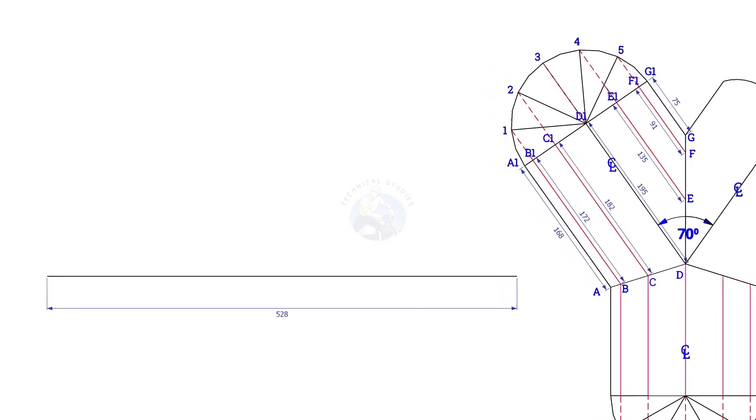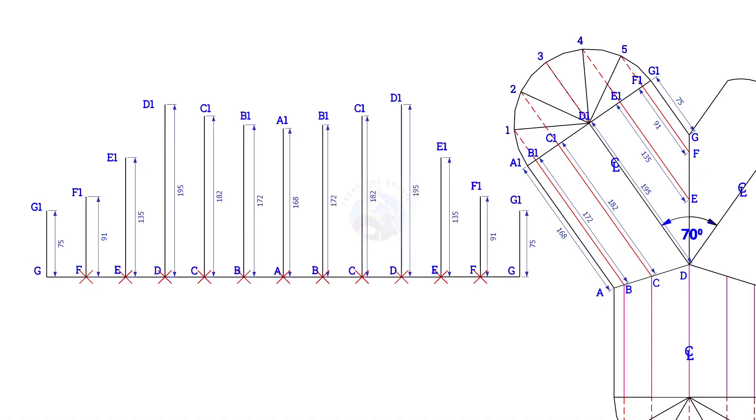Draw the pipe circumference line. Divide the line to 12 equal parts and draw vertical lines G to G1, F, F1, etc., and draw a curve as in the previous layout.